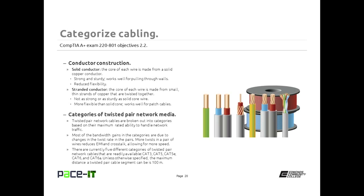Twisted pair network cables are broken out into categories based on their maximum rated ability to handle network traffic. Most of those bandwidth gains are due to changes in twist rates — more twists reduce EMI and crosstalk, allowing for more speed, but also require more wire to span the same distance. There are currently five different categories of twisted pair wiring, ranging from CAT 3 through CAT 6A. Unless stated otherwise, the maximum distance any single segment can span in an Ethernet network is 100 meters.